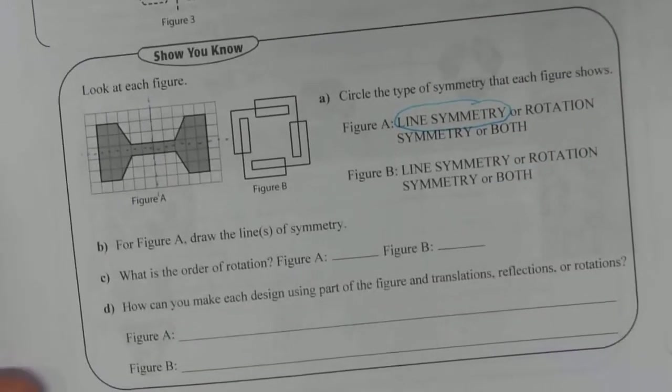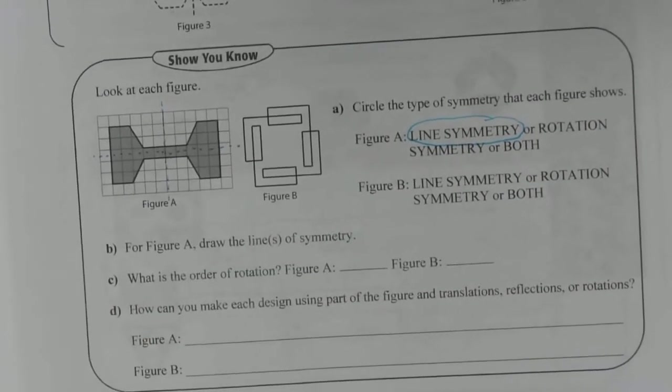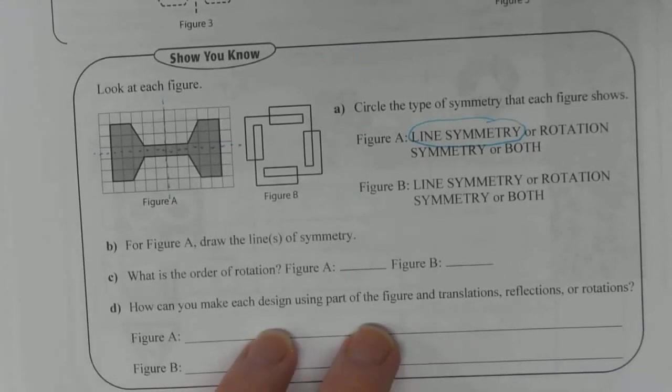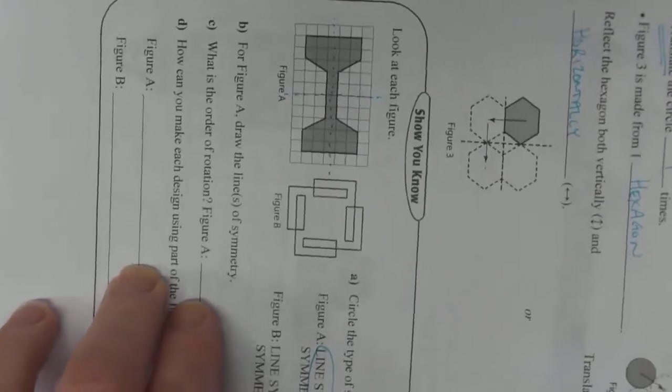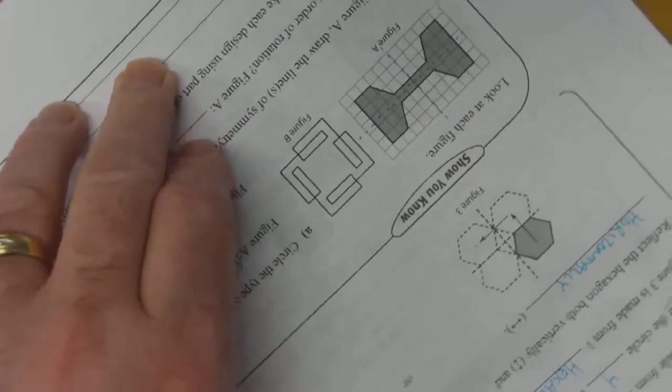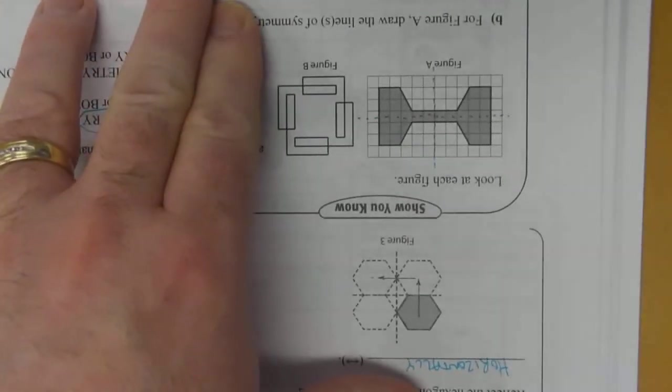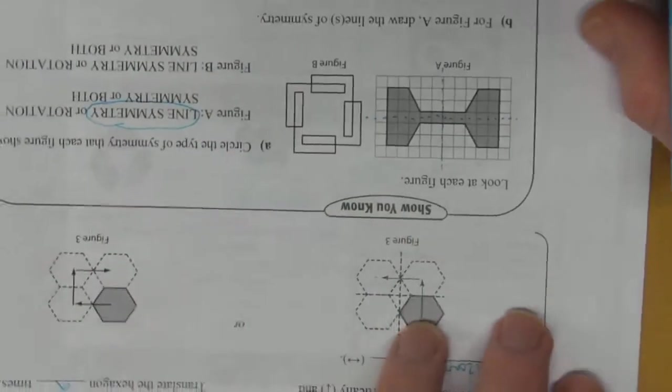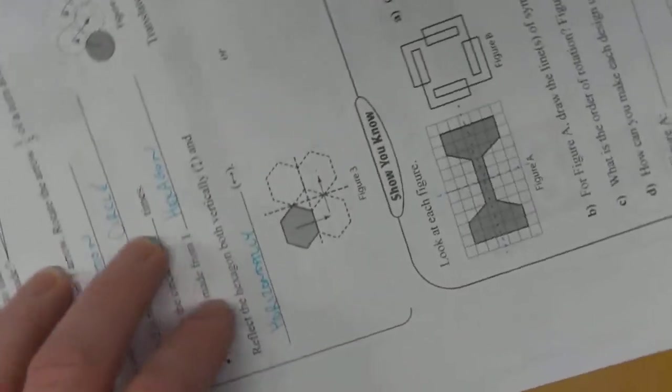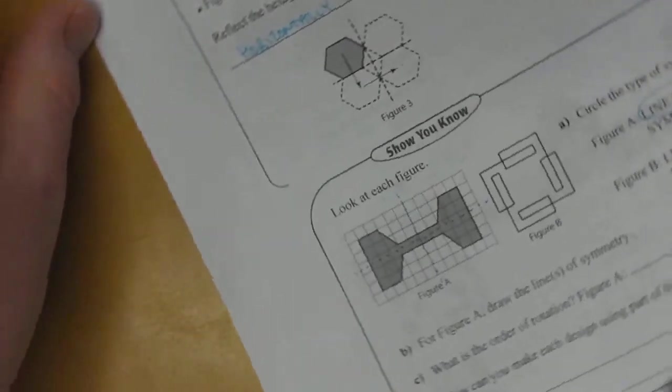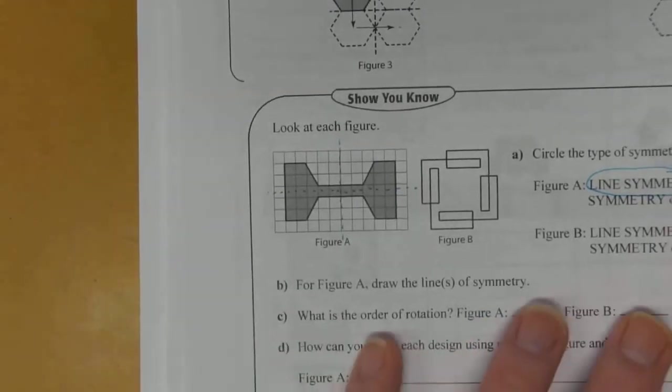Now the question is, does it have rotational symmetry? So the original shape, it looks like a dumbbell. Now it looks like an hourglass. Oh, we're back to a dumbbell. So that's one hourglass, so two. So it does have rotational symmetry.